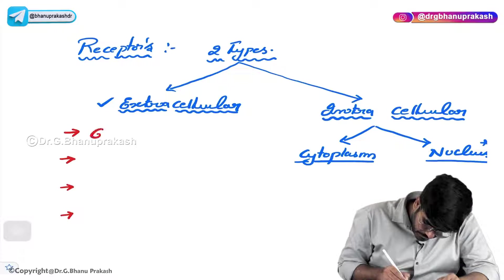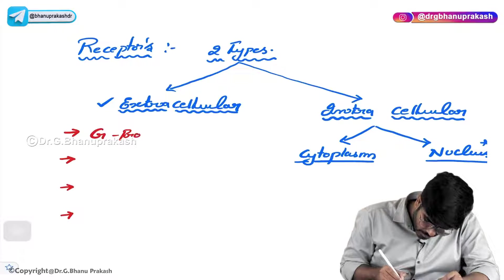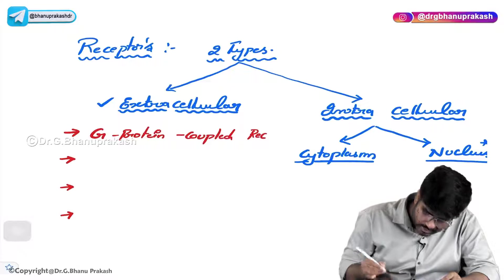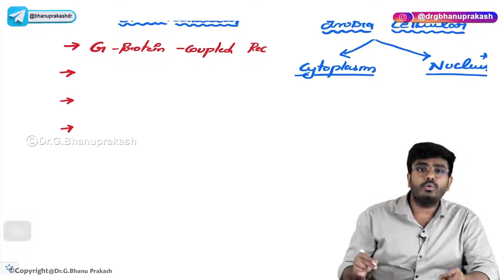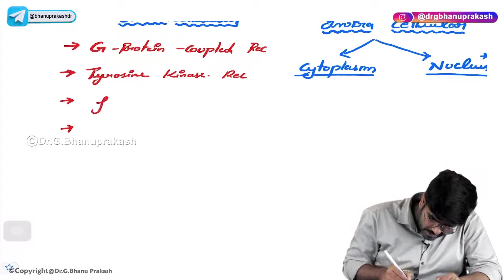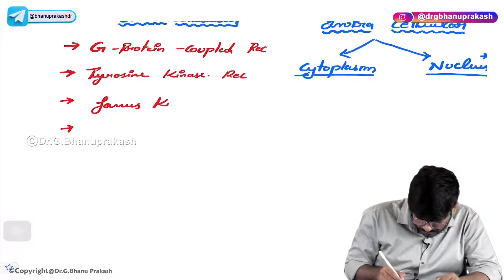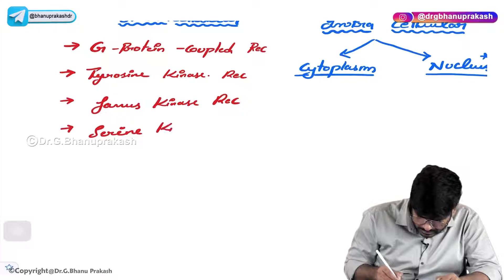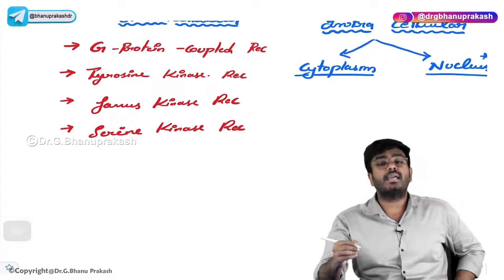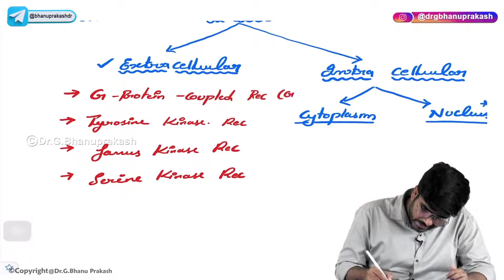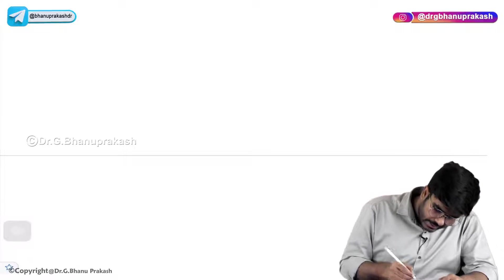What are the examples of extracellular receptors? The first and very important example is G protein coupled receptor, abbreviated as GPCR. The second example is tyrosine kinase receptor. Third are JAK receptors, or Janus kinase receptors, and serine kinase receptors. These are the different types of extracellular receptors to know.